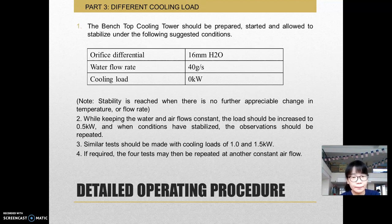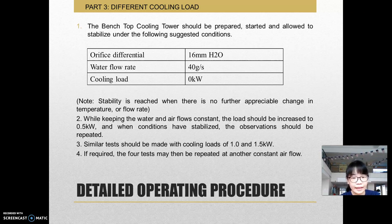For Part 3, the bench top cooling tower should be stabilized under the suggested cooling conditions. The orifice heat ratio should be alpha 316, the water flow rate is 40 grams per second, and the cooling load should be 0 kW. When stabilization is reached — that is, when there is no further change — the water and airflow are kept constant. The load should then be increased by 0.5 kW, and when conditions have stabilized, the observation should be repeated. A similar test should be made with heating loads of 1 and 1.5 kW. If required, the fourth test may be repeated at another constant setting.